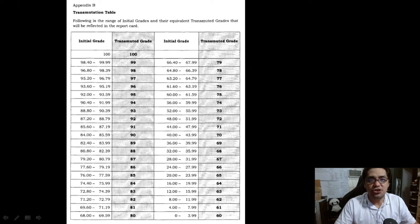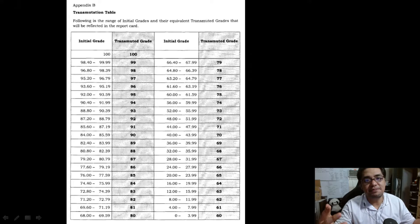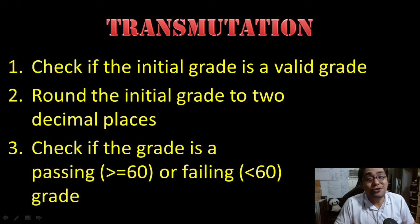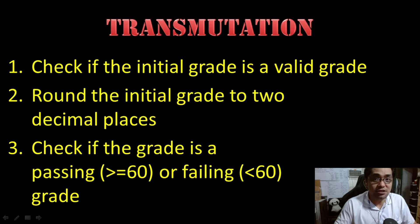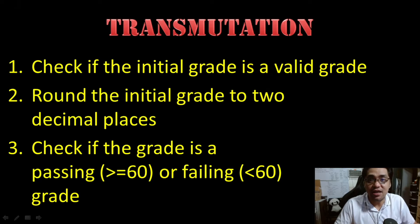All right. So how does transmutation work? What is the transmutation formula? How can you do it manually? The following are the steps to transmutation. First step, you have to check if the initial grade is a valid grade. When I say it's a valid grade, you have to check that the initial grade is not less than zero, meaning it's not a negative number, it's not greater than 100, and that it is a number in the first place.